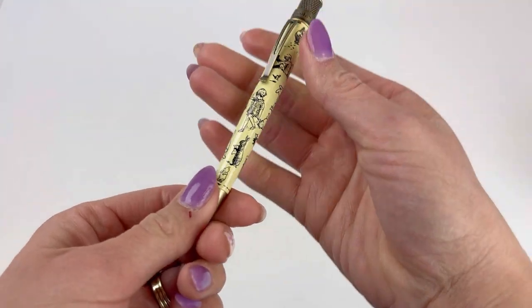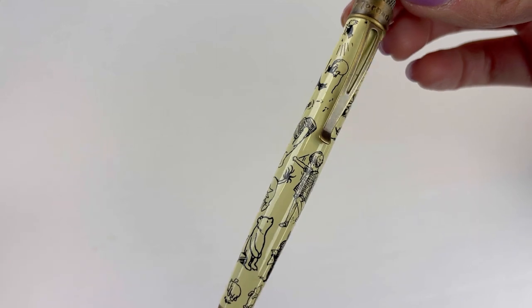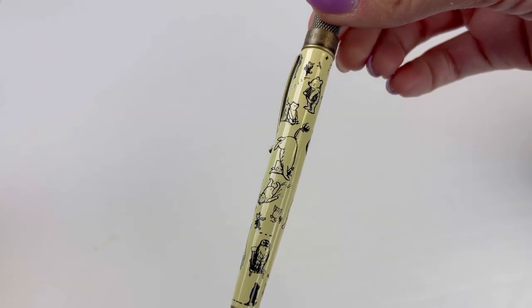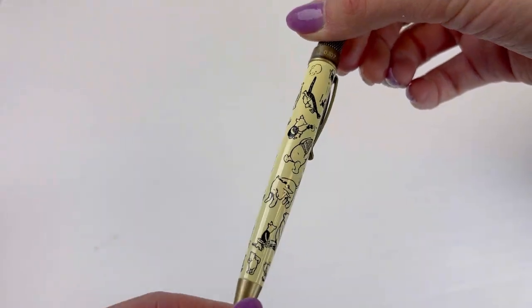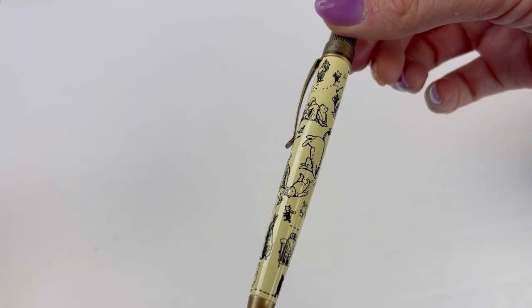This is the newest tornado inspired by the Winnie the Pooh stories, and it actually has the illustrations from the original self-published book printed right on the barrel. That is done with a light yellow background with black illustrations.